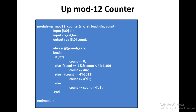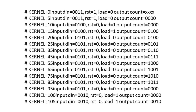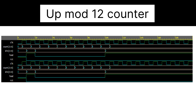The testbench for the mod-12 counter is very similar — reg type inputs, wire type output, instantiation, then initial blocks for clock generation, input initialization, different input sets, and finally $monitor and $finish commands. After simulation, the output shows the count increasing: 100, 101, 110, 111, 1000, 1001, 1010, 1011, and after reaching 1011 (11), it comes back to 0000. The waveform also verifies the correct working of the circuit.